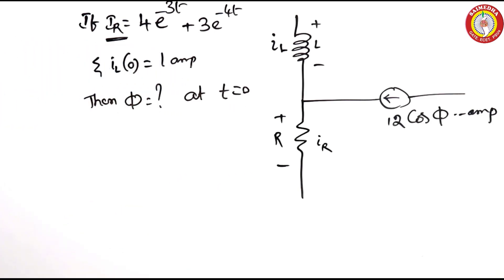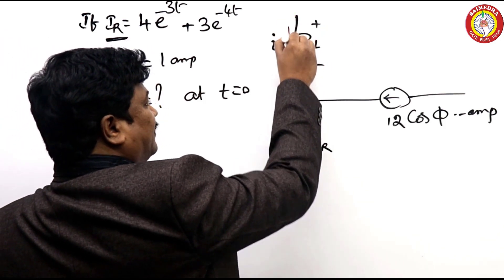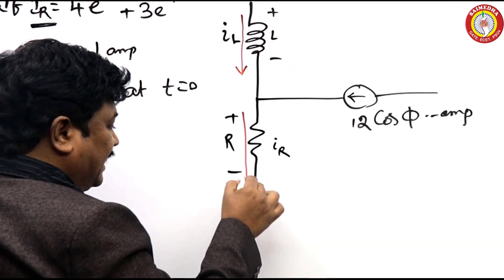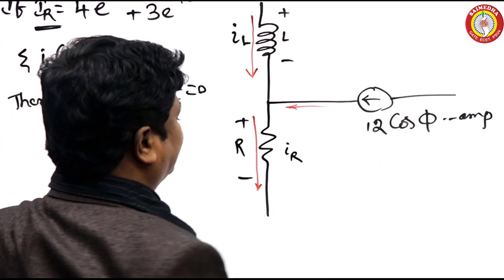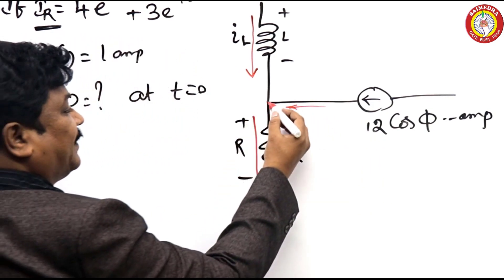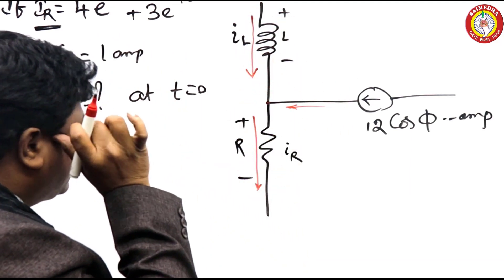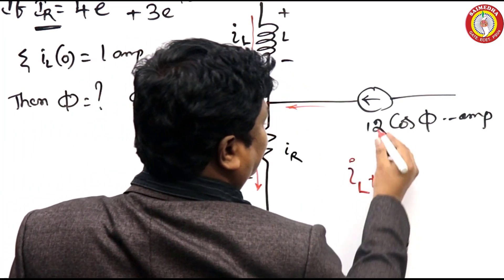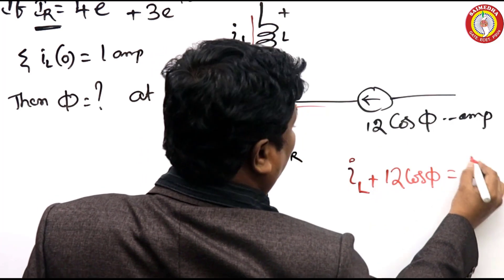First of all, we should find what is the direction of the current. It is a passive element, so this is the direction. This one is also given direction - it is a current source. How many incoming currents are there? 2 incoming currents for this node - this one and this one. This is outgoing current. Hence, what you can write: I_L plus 12·cos(φ) equals I_R.